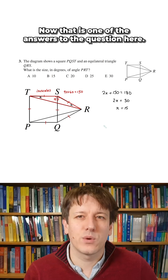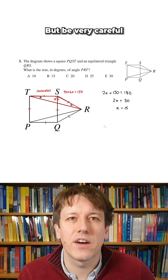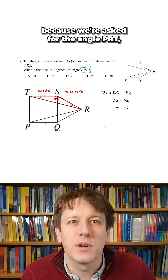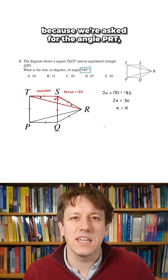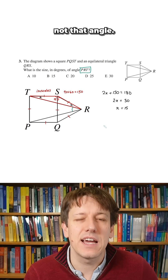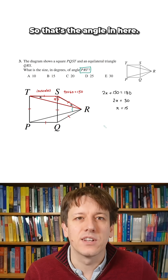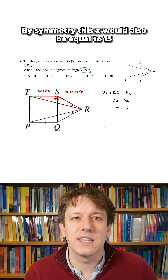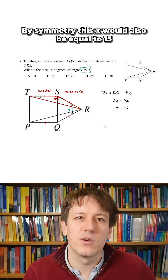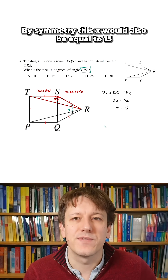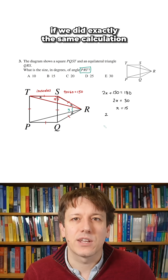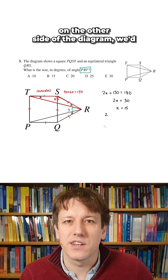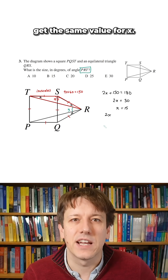Now that is one of the answers to the question, but be very careful, because we're asked for the angle PRT, not that angle. That's the angle in here. By symmetry, this X would also equal 15 — if we did exactly the same calculation on the other side of the diagram, we'd get the same value for X.